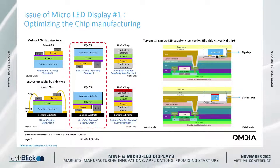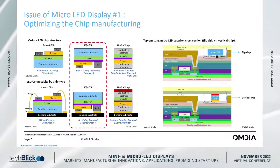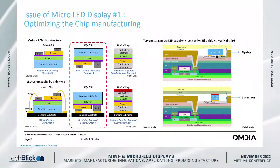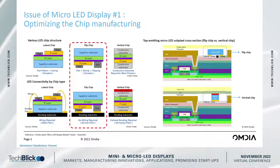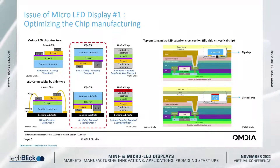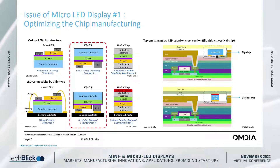The first thing in the micro LED display industry is how to design the micro LED chip. As you can see in the red side figures, there are three kinds of micro LED chip designs. The very traditional one is the lateral chip, where the electrical pad is on the upside and it needs to be wired to the substrate. But in this case, it is very difficult to achieve a small pixel pitch.